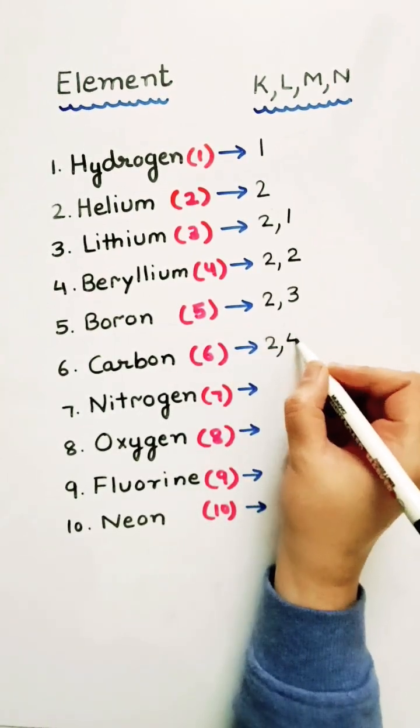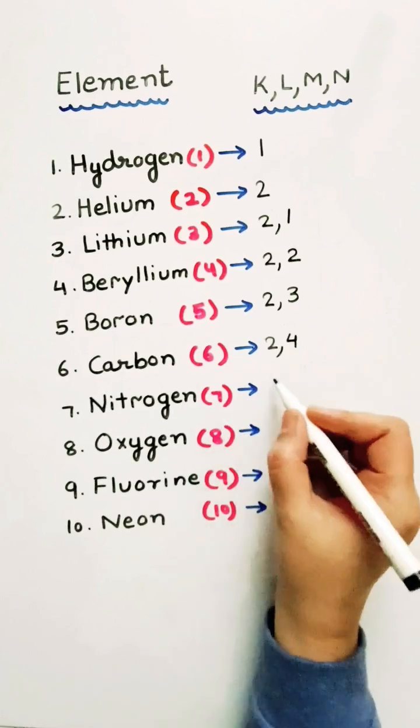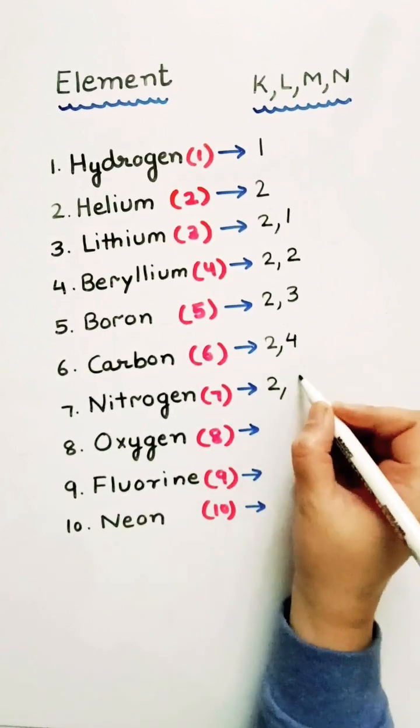This is carbon. So, this will be 2, 4. Nitrogen, 2, 5.